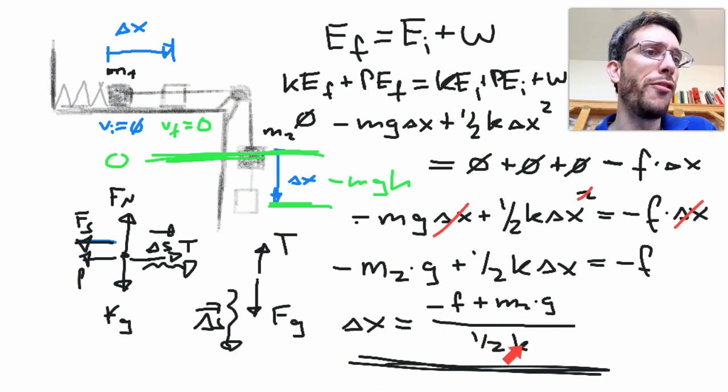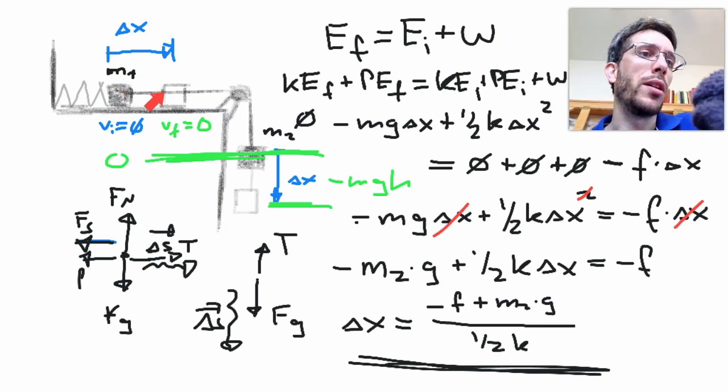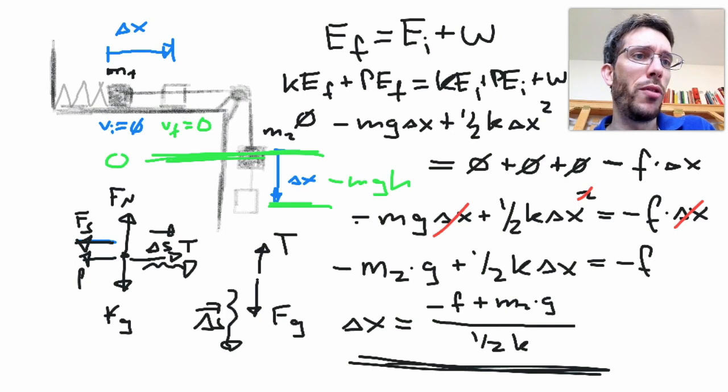And then if my spring is stiffer, meaning it will create a bigger force, the less I'm going to be sliding to the right too. Now if ever you have a problem like this where actually the friction is zero, then this one simply falls out and you have mass 2 times gravity over 1 half of the spring constant.